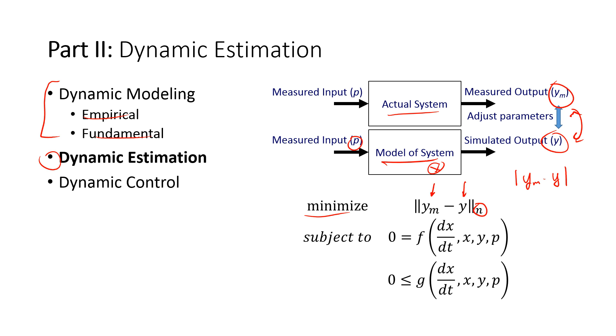It could be a two norm, where we have y measured minus y model squared, and then we take the square root of that, or to the one half. We could also have the infinity norm, where that's y measured minus y model to the infinity, one over infinity. That's going to minimize the maximum value, or the maximum deviation between the measured and the model. All of these are valid methods to do this.